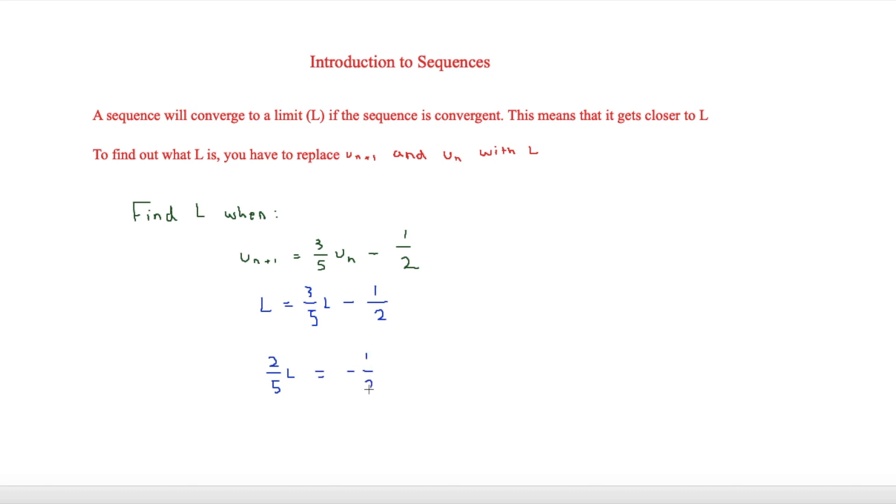And then finally, we'll do l is equal to minus a half divided by 2 fifths, which is equal to minus 5 over 4. And that means that this sequence 3 fifths un minus a half will converge to minus 5 over 4.